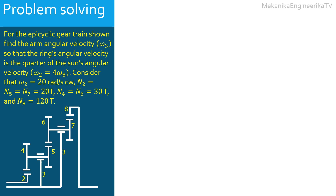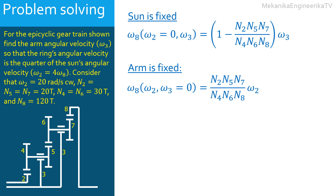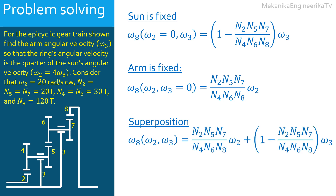We have shown that ω₈ when the sun 2 is fixed equals [1 − (N₂·N₅·N₇)/(N₄·N₆·N₈)] · ω₃. We have also shown that ω₈ when the arm 3 is fixed equals (N₂·N₅·N₇)/(N₄·N₆·N₈) · ω₂. The superposition of the two effects gives: ω₈ = (N₂·N₅·N₇)/(N₄·N₆·N₈) · ω₂ + [1 − (N₂·N₅·N₇)/(N₄·N₆·N₈)] · ω₃.